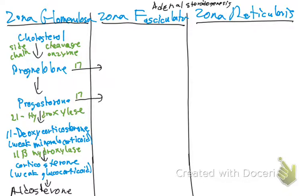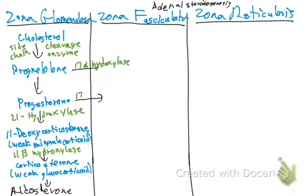To review: everything in the zona glomerulosa starts with cholesterol, using the side chain cleavage enzyme to form pregnenolone. Pregnenolone can cross to the zona fasciculata using the enzyme 17-alpha hydroxylase.